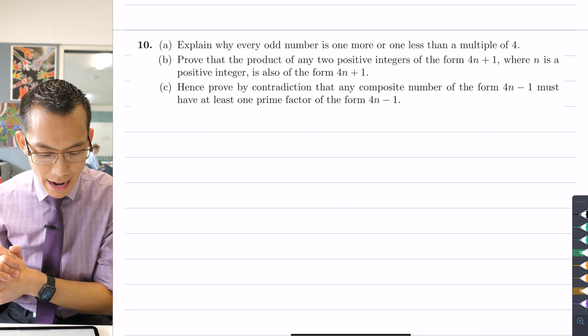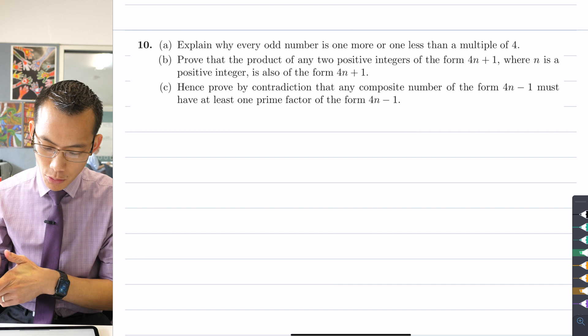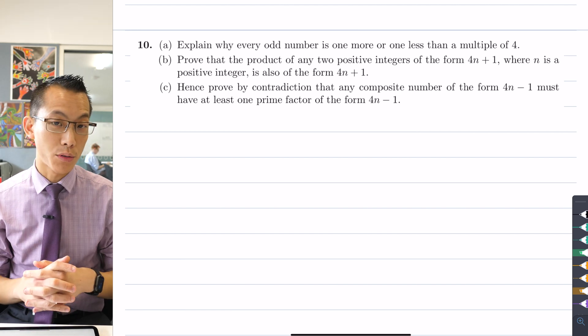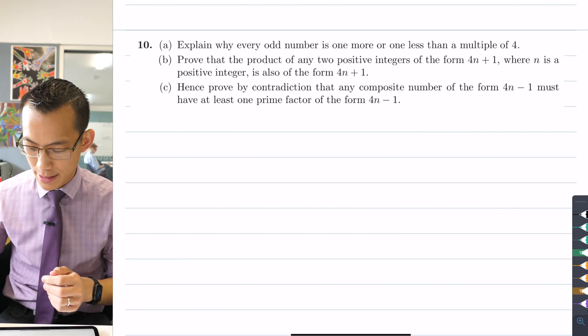Question 10 part A says explain why every odd number is one more or one less than a multiple of four. Okay, let's start to unpack this.